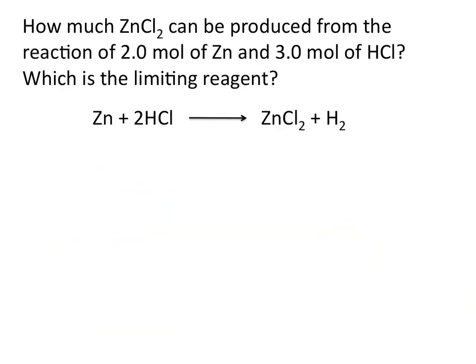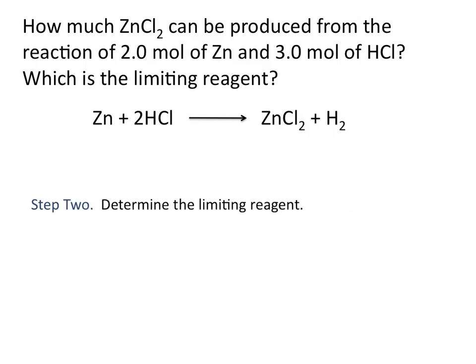Now let's look at a more chemistry-specific example. How much zinc chloride can be produced from the reaction of two moles of zinc and three moles of hydrochloric acid, and which is the limiting reagent? For your first step you're going to check for a correctly balanced equation, and in this example our reaction is already balanced. The second step is to determine the limiting reagent.